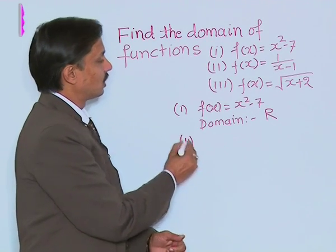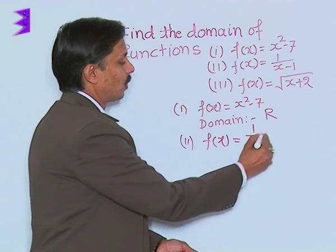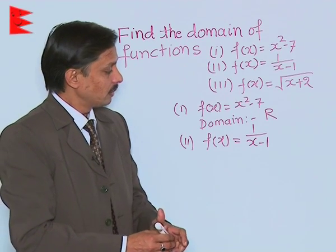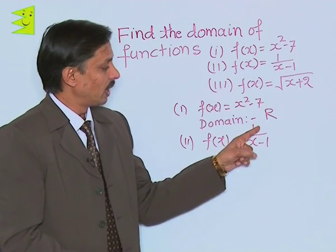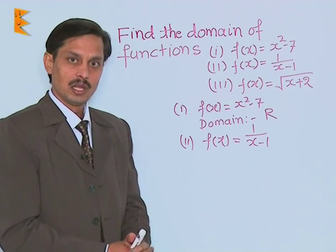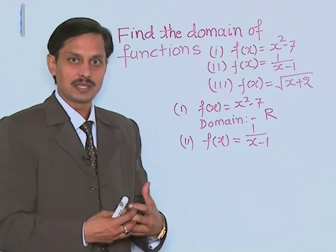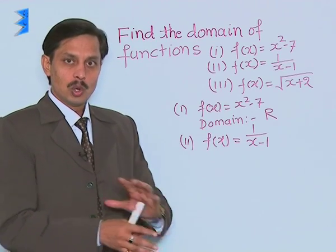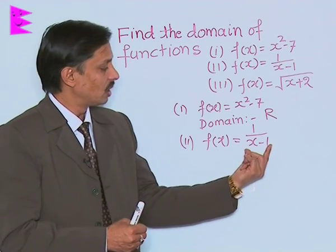Now for the second part, the function is 1/(x - 1). We should take care that if the denominator becomes 0, then any number upon 0 comes to infinity — not defined. The domain is the set of values of x where the function remains defined, meaning no value of x that makes the denominator 0 can be accepted.